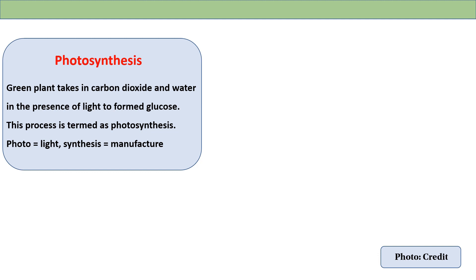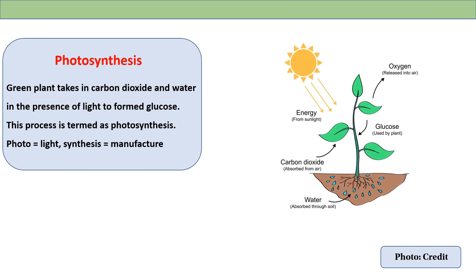The word photosynthesis comes from two parts: photo means light, and synthesis means manufacture. The green plant uses autotrophic nutrition — it is able to manufacture its own food.